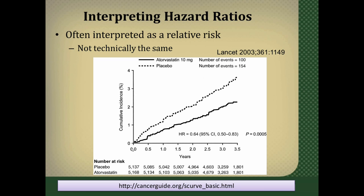As people accrued events, they were plotted along the curve. The dark line is the atorvastatin line and the dotted line is the placebo line. As time goes on, fewer people are event-free, so this number goes down. There is also a reference shown here — a nice website to help you understand how to interpret survival curves. Here's the hazard ratio calculated from a Cox proportional hazards model for the ASCOT LLA trial: the hazard ratio is 0.64.